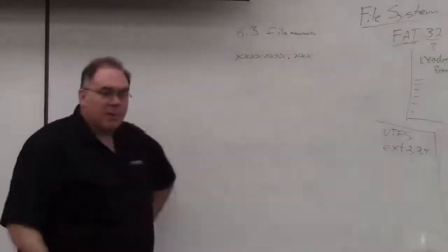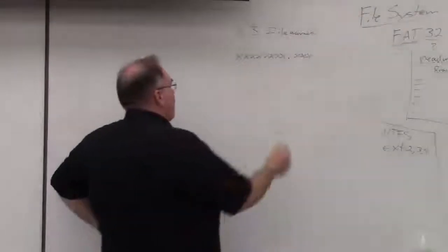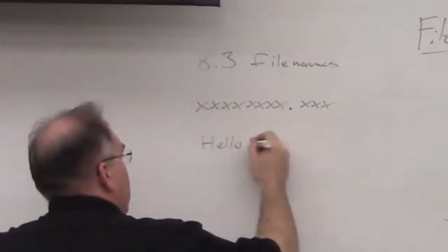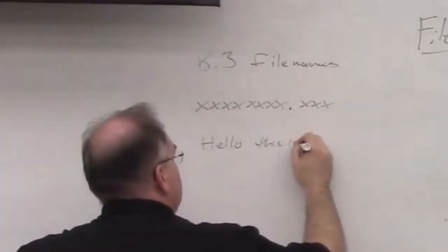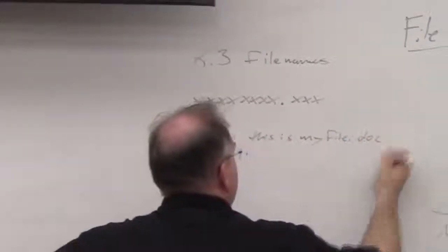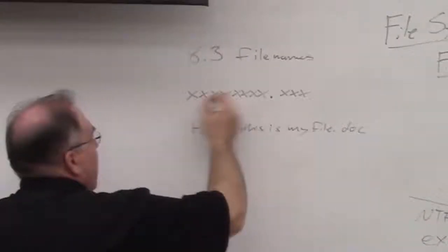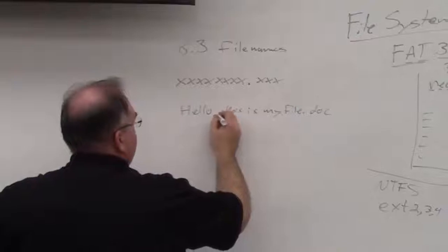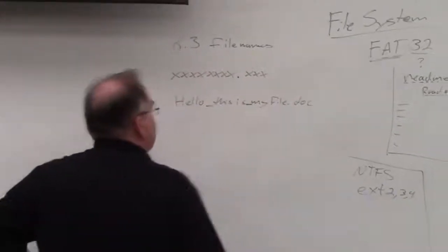And as most of you probably know, you could create a file today that's called hello this is my file.doc, whatever, right? And you could have spaces. The 8.3 file names could not have spaces. They could have underscore characters, stuff like that.